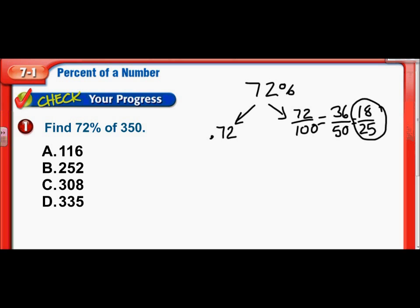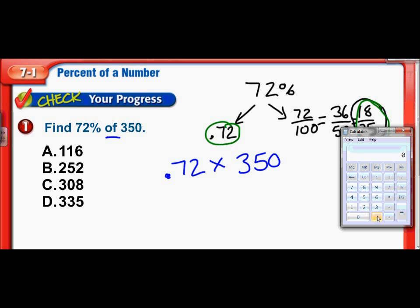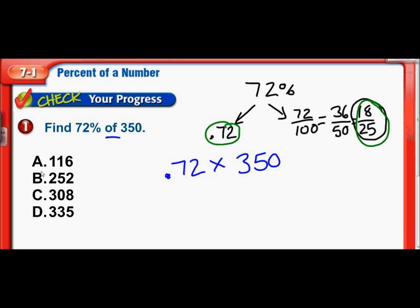So, now it's up to us. Do we want to use this .72 or the 18 over 25? I think I'm going to go with the .72. So, here we go. We're going to take that .72. I said before, of means to multiply. So, we're going to multiply that by, well, there's a 350. So, that's all it is. Pretty straightforward, right? Let me bring up a calculator, and we'll take care of that right now. So, we have .72 times 350. And that equals 252. So, there we are. Our answer is B. Okay, let's move on.